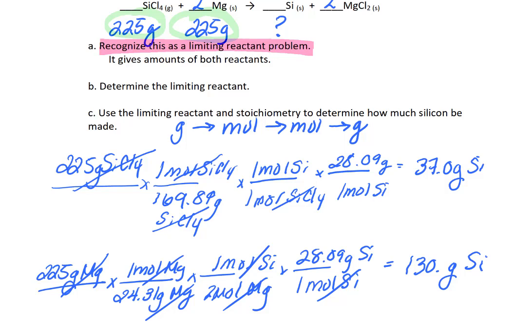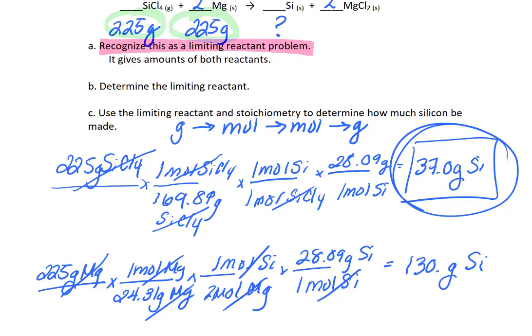Now we have two results and students often get stuck here. Remember: you have one final answer, and that is the least amount that can be made. So you box the smaller amount — that is the grams of silicon that can actually be produced. Whichever reactant gave the smaller amount is your limiting reactant (LR). In this case, silicon tetrachloride is the limiting reactant, and from this reaction you can make 37.0 grams of silicon.